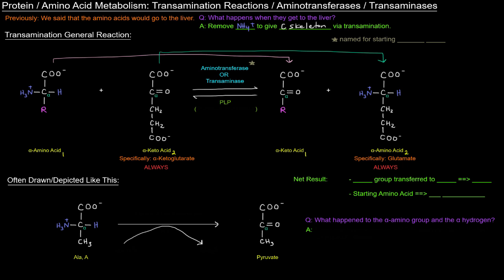And it's often named, the aminotransferase is often named for the starting amino acid. So, for example, if we have alanine here at the bottom, this is our starting amino acid. It's going to be turned into its alpha keto acid, which is specifically pyruvate. And this is going to be catalyzed by an aminotransferase, specifically alanine aminotransferase. So it's an aminotransferase named for the starting amino acid, which in this case, in this example, is alanine.